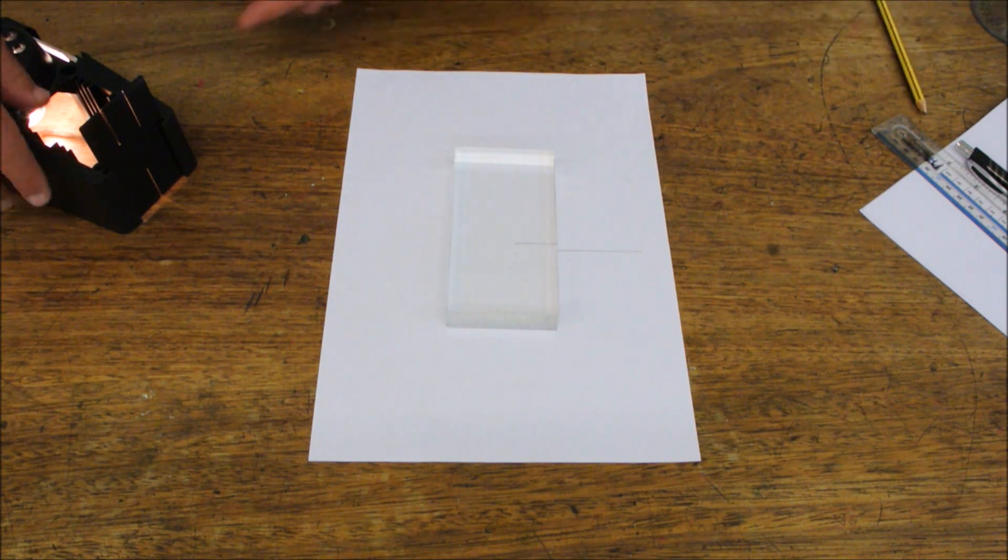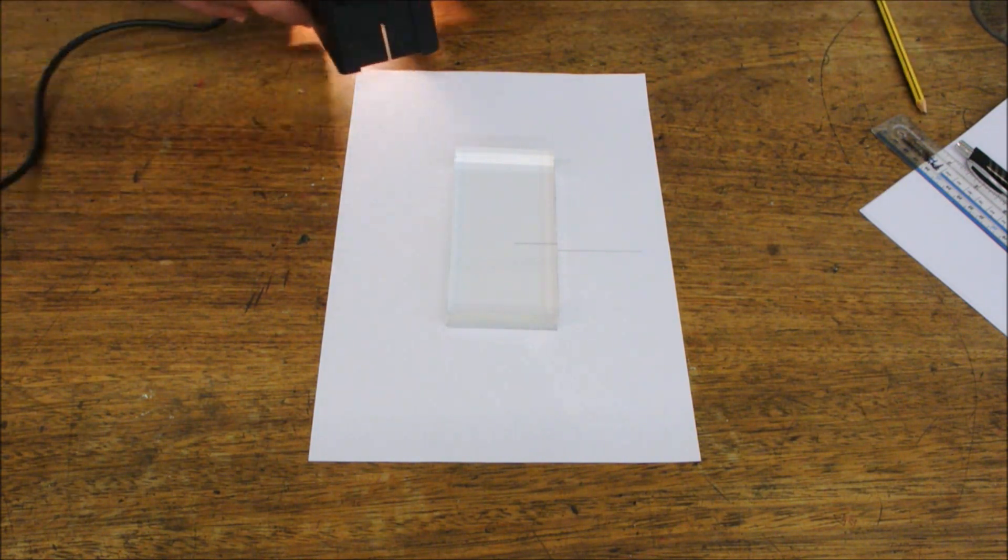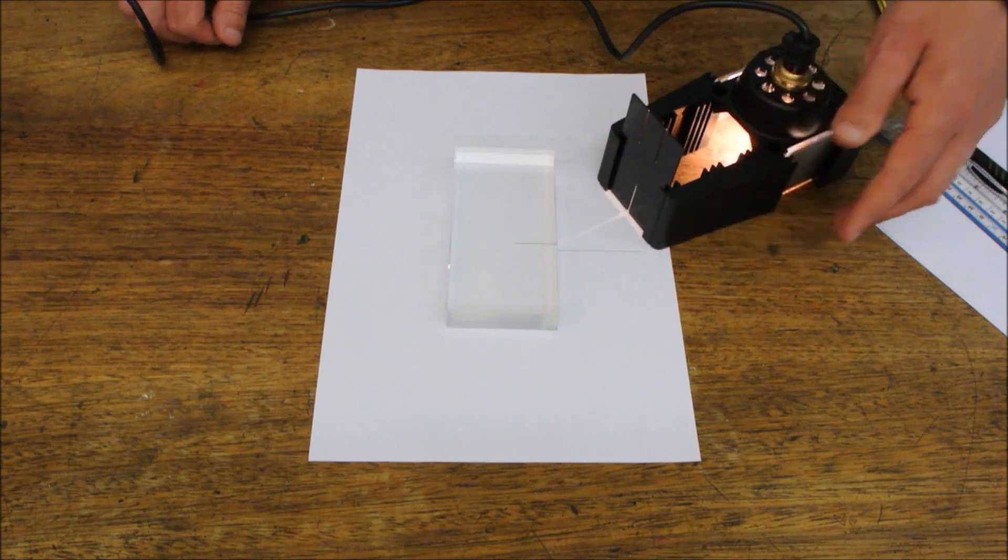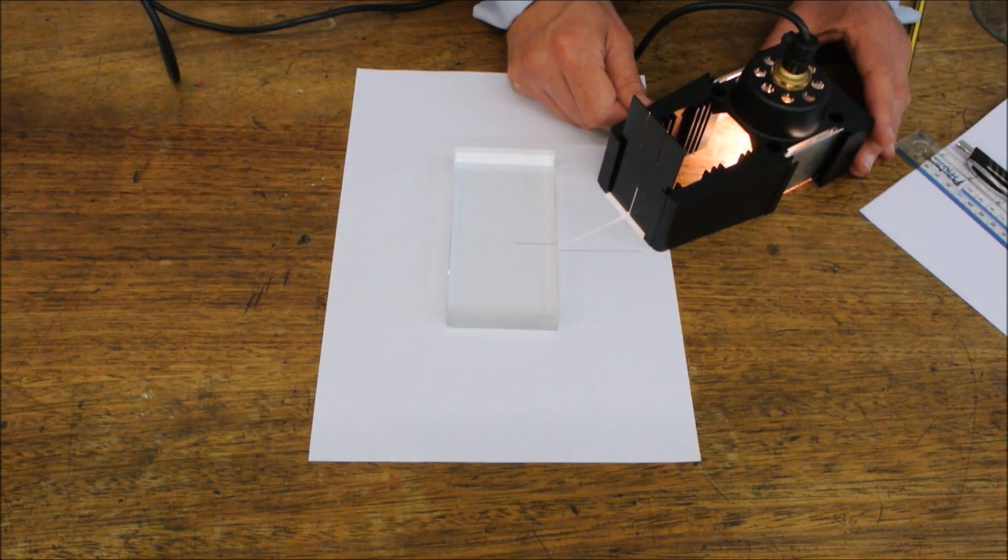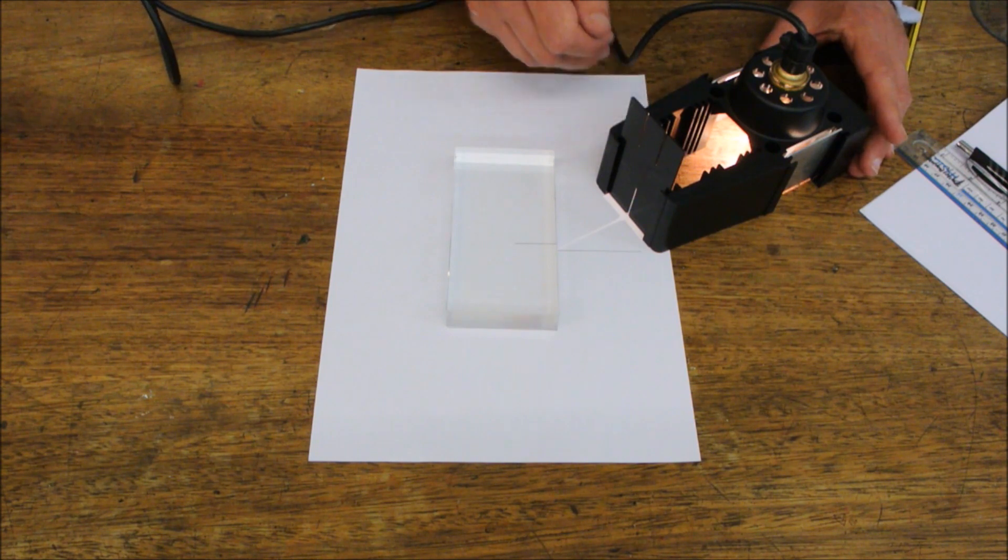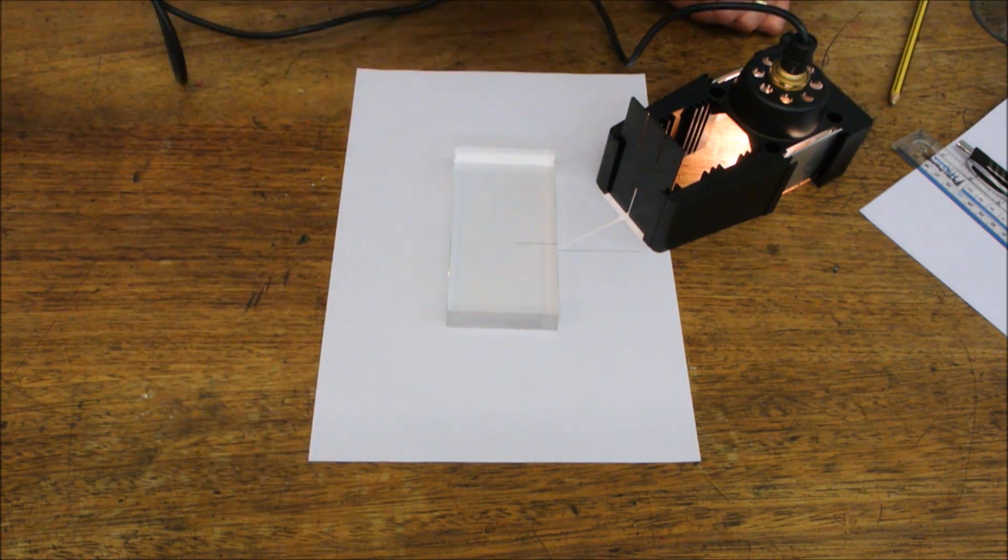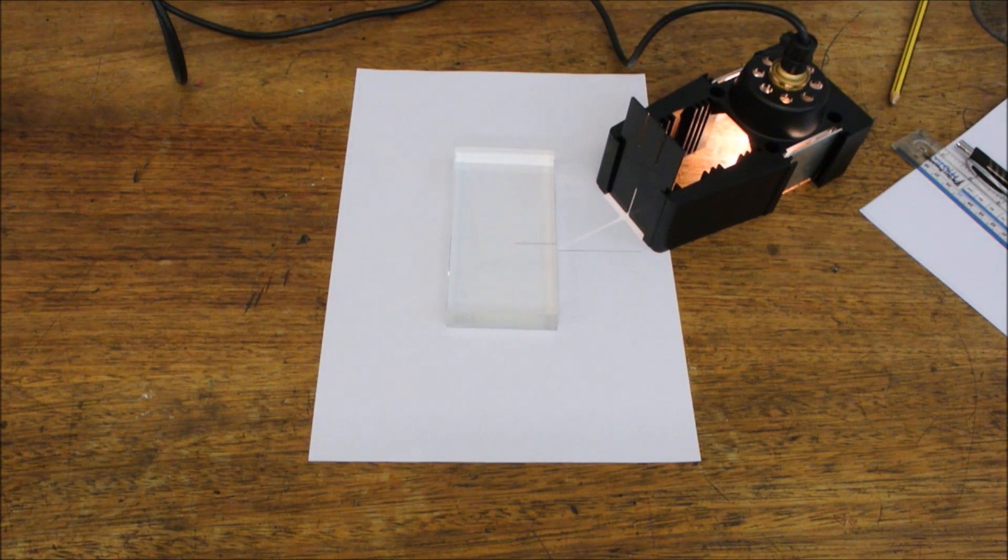Then, take your ray box and shine a ray of light such that it is incident on the edge of the paper where you've just drawn that line there. Let me just turn the lights down.